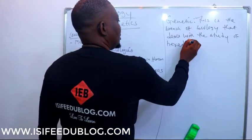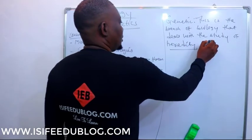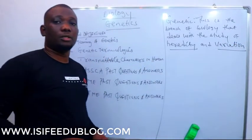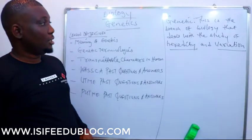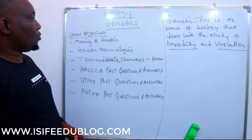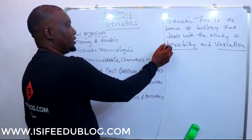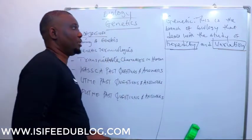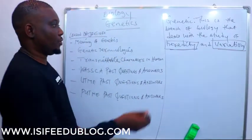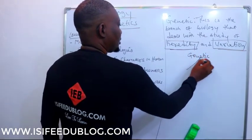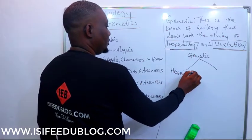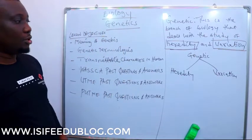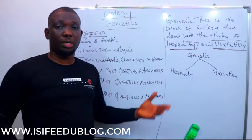Genetics is the branch of biology that deals with the study of heredity and variation. Those are the two key words. Examiners like to test the heredity aspect of genetics as well as the variation aspect. So genetics is broadly classified into two branches: heredity and variation.